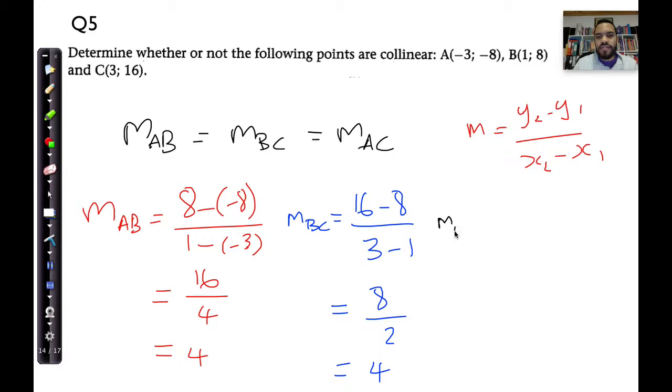And let's do that over there. M_AC is going to be, let's take the C's first, 16 minus minus 8 divided by 16 minus minus 8, and then 3 minus minus 3. And what does that give me? That gives me 16 plus 8 is going to be 24, and 3 plus 3 is going to be 6, and 24 divided by 6 is 4.